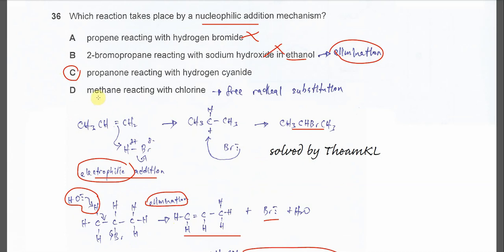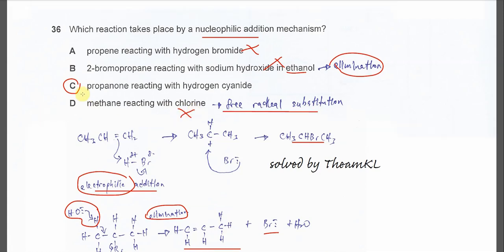For D, methane reacts with chlorine. So this is a free radical substitution. It starts with chlorine radical, which attacks the methane. So this is not the answer. Answer confirmed is C. That's all. Thank you.